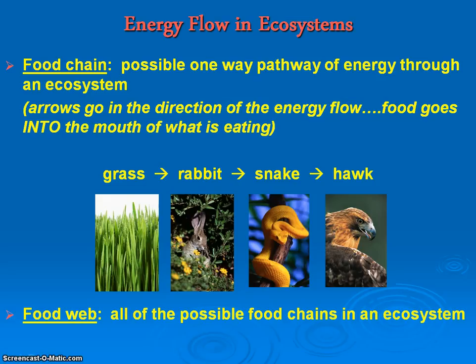Now remember what's important about food chains — and sometimes this can be a misconception — is that the arrow points in the direction that the energy is flowing. So if you look at this simple food chain, the grass is going to be eaten by the rabbit, then the snake is going to eat the rabbit, and then the bird will eat the snake, showing that the arrow indicates energy flowing in that direction.